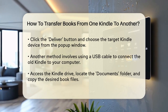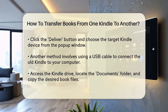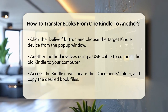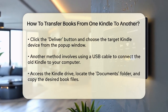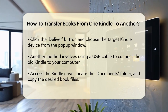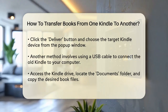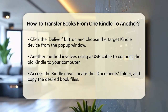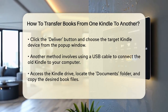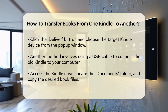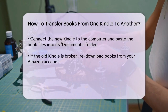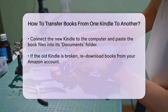Another way to transfer books is by using a USB cable. Connect your old Kindle to your computer using the USB cable. Your computer will recognize the Kindle as a drive. Open the Kindle drive, go to the Documents folder, and copy all the book files you want to transfer. Then connect your new Kindle to the computer, open its drive, and paste the book files into the Documents folder. This method is especially useful for books not purchased from Amazon, as they won't be protected by DRM.